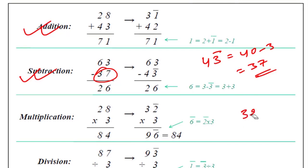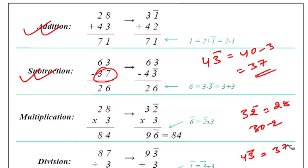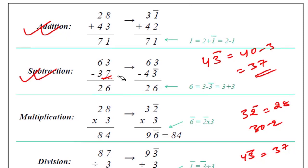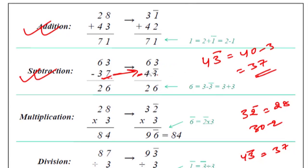Look, 32 bar equals 30 minus 2. Similarly, 43 bar means 37. So we can write 43 bar. Now we are going to subtract. 3 plus 3 minus 3 is 6. Because this is a minus, we will have to add this. So this is 6, and 6 minus 4 is 2. This is the answer.